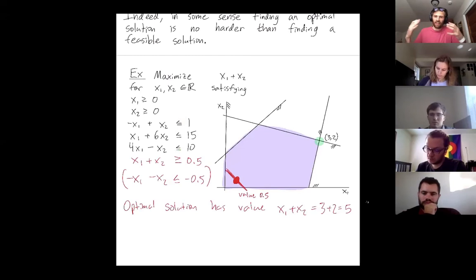So I've added this new constraint. I want my solution to be at least 0.5. Let's see. Let me show you how you iterate this.